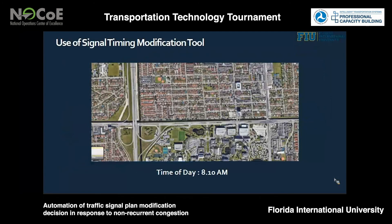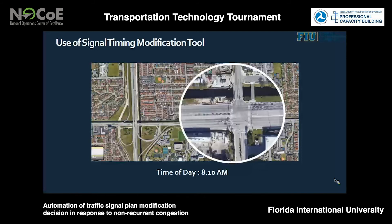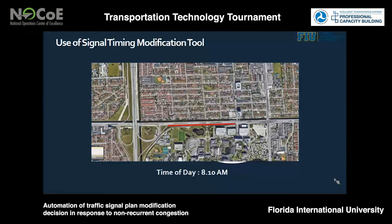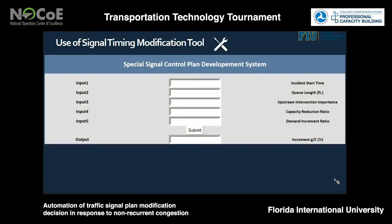Let's explain how the software works with an example. Say it is a typical morning peak hour. At this intersection, there is an upstream intersection connected to a ramp, with four lanes in the eastbound through movement. If an incident blocks two lanes, a queue will form from this intersection back to the upstream intersection, and we anticipate the queue length will be 2,500 feet. The software has five inputs: incident start time is morning peak hour, coded as 1; queue length is 2,500 feet; upstream intersection importance is very important, coded as 3; and capacity reduction ratio is 0.5, because two out of four lanes are blocked.